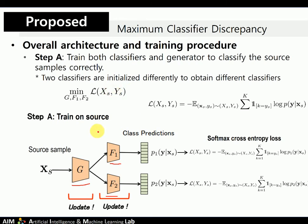In the first step, we train both the generator and two classifiers to classify source samples correctly. The network is trained to minimize softmax cross-entropy loss. In this step, the two classifiers are initialized differently to obtain different classifiers. This step is crucial in order to make the classifiers and generator obtain task-specific discriminative features.